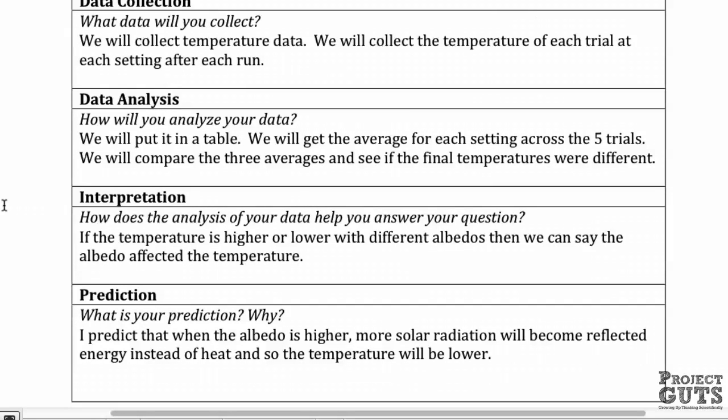And how are you going to analyze that data? Well, you're going to put it in a table. We're going to get the average for each setting across the five trials. That should hopefully take into account some of the randomness. And then we will compare the three averages and see if the final temperatures were different.